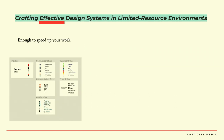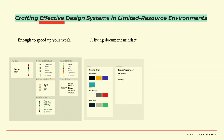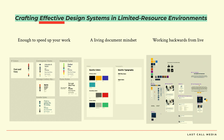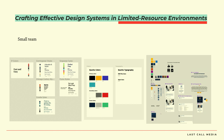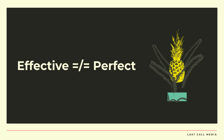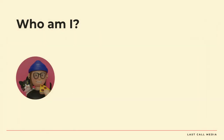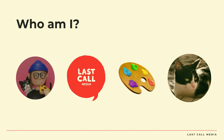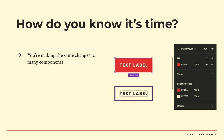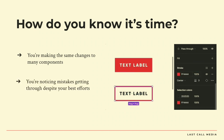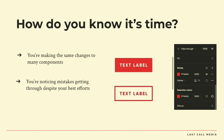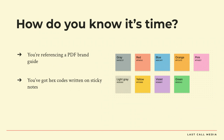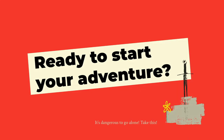So what do I mean by effective? It's enough to speed up your work. It's a living document mindset — we're always working on this. And it might mean you're working backwards from life. Limited resource could mean you have a small team, a small budget, limited time constraints, or a lack of support in your organization. Effective doesn't mean perfect. And speaking of imperfect — who am I? My name is Molly. I work at Last Call Media. I've been there over five years and I've been doing design for over ten. That's my cat Frankie — if you give me a platform, you're going to have a picture of Frankie on it. So how do you know it's time to start this design system effort? Maybe you're making the same changes to many components, noticing mistakes getting through despite your best efforts, referencing a PDF brand guide, or you've got hex codes written on sticky notes all over your desk.